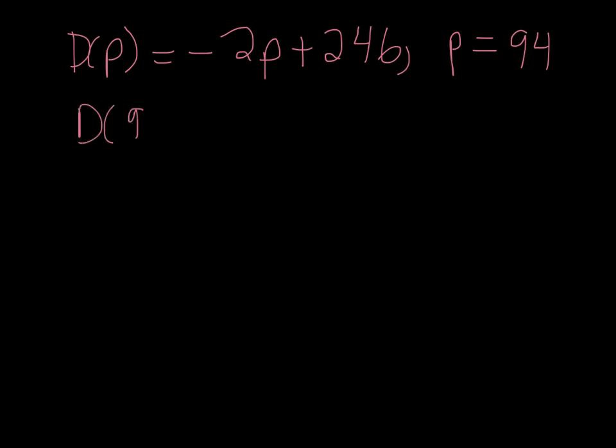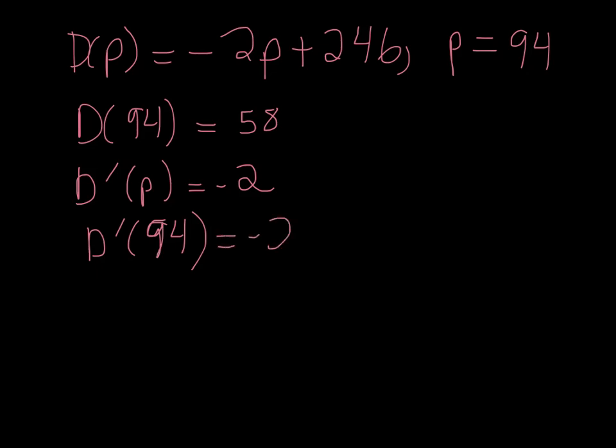We're given that D(p) is negative 2p plus 246. Real basic equation. p is 94. Alright, let's start with D(94). That happens to be 58. D prime of p is just negative 2. So D prime of 94 is negative 2 because that's a constant function.